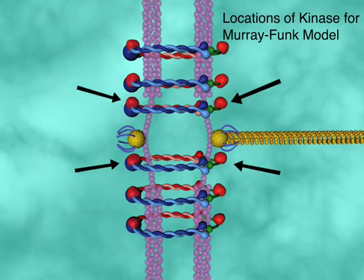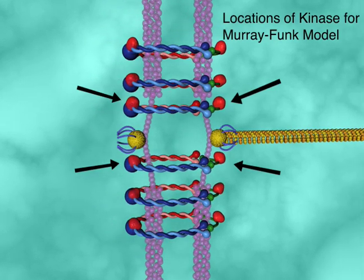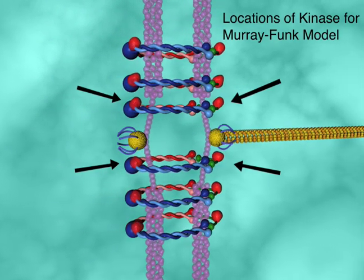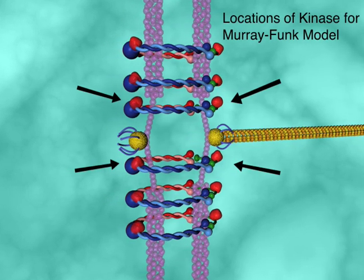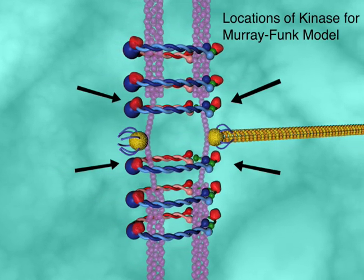When the chromosome is in mono-orientation, no tension is generated and the chromatids are not stretched. The cohesin rings are able to slide close to the kinetochore and bring the kinase close to its targets.